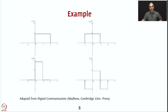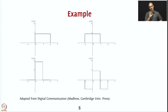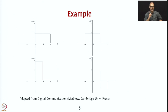Let us now carefully perform Gram-Schmidt orthogonalization on this signal set. An important remark: the resulting orthonormal basis depends on which signals you choose and in which order. We are going to choose them in order 1, 2, 3, 4. If you choose another order, you will get a different but equally correct basis set. The basis set from Gram-Schmidt orthogonalization is not unique.